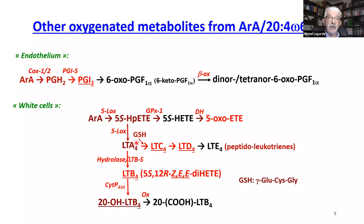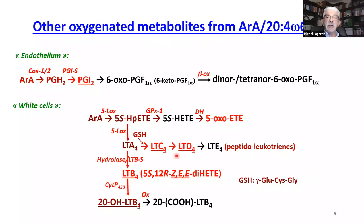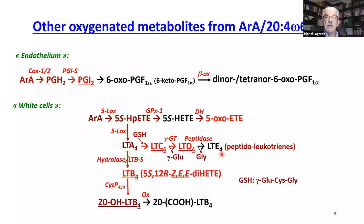In eosinophils, glutathione (the tripeptide gamma-glutamyl-cysteinyl-glycine), with its thiol group, opens the LTA4 epoxide to form LTC4. LTC4 and its products are active bronchoconstricting molecules. LTC4 is transformed by gamma-glutamyl transferase into LTD4, and then a peptidase releases glycine, maintaining cysteine on the molecule, giving LTE4, which is considered inactive. These molecules are collectively called peptidoleukotrienes.